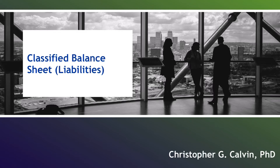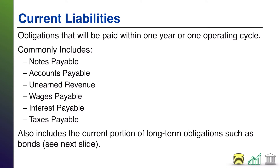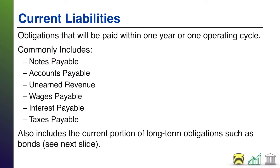In this section, I am going to deep dive into the liabilities section of the classified balance sheet. Unlike the asset section, the liability section only gets broken out into two subcategories. The first of those subcategories is current liabilities. Remember that the word current basically means within one year. Liabilities are the debts you have to pay, so current liabilities are basically the obligations or debts that you're going to have to pay within one year.